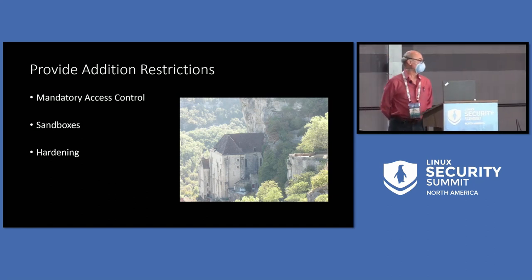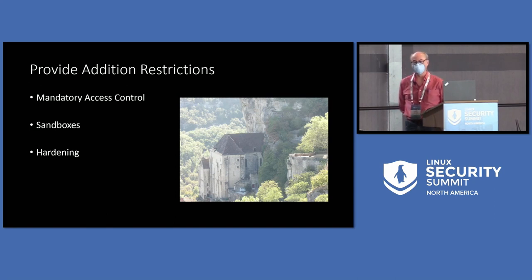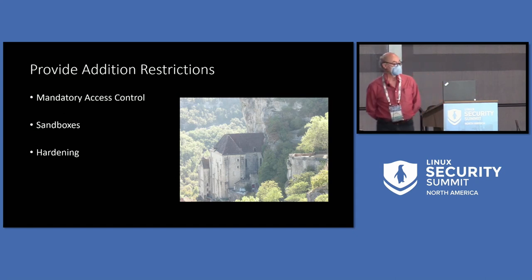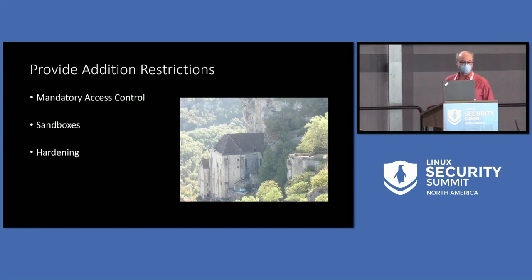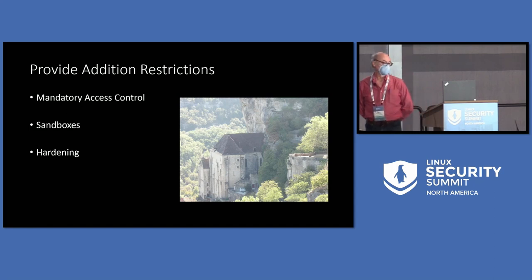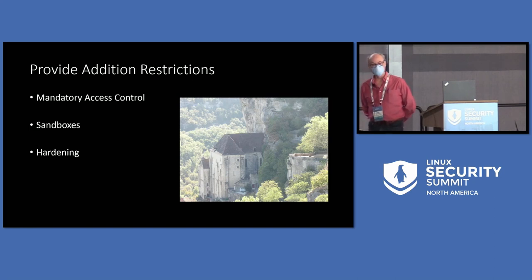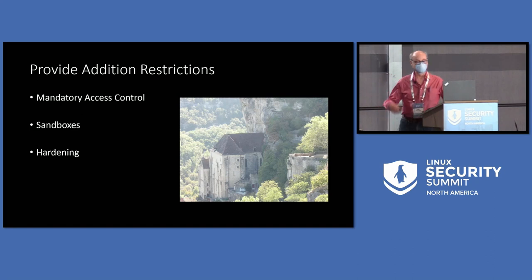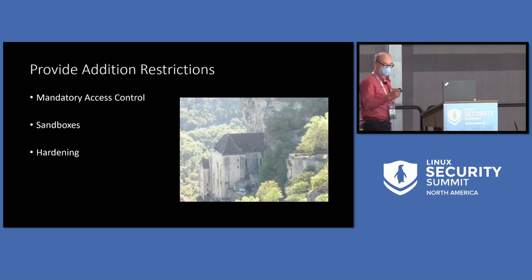Traditionally, mandatory access control was the initial focus. Today, though, we're using it for sandboxes and hardening work. Yama is a good example of some of the hardening we've done. For sandboxes, we've got Landlock, and for mandatory access control, SELinux and AppArmor. AppArmor is now going to be doing some sandboxing too, so we've got a good collection of additional restrictions you can have with the normal system policies.